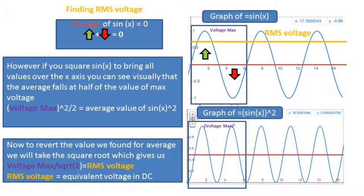Now if we take the voltage max squared over 2 and we take the square root of that, we get voltage max over square root of 2 equals RMS voltage.